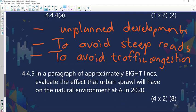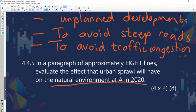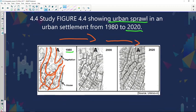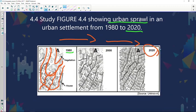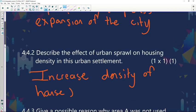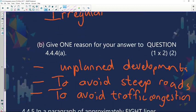If you look at question 4.4.5, in a paragraph of approximately eight lines, evaluate the effect that urban sprawl will have on the natural environment. The natural environment is talking about plant and animal life. If you look at the situation in 2002, you can see there's basically no trees left in this area because of the urban sprawl movement. So what effect will it have on the natural environment? Obviously quite a few. I'm going to write it in bullet formation, but please remember you need to write it in paragraph formation.